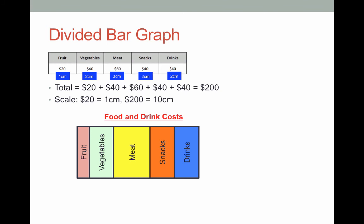Like a sector graph it uses a shape to represent all the information but this is actually a little bit easier to draw because it's a rectangle instead of a circle and you don't need a compass or a protractor for it. So I'd like you to pause and summarize this information. Write the question. Write down the total and the scale that we worked out and use a ruler to draw the graph.